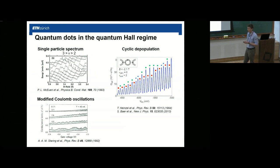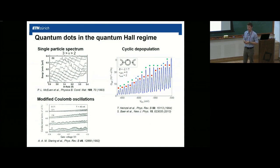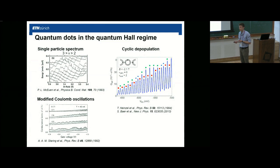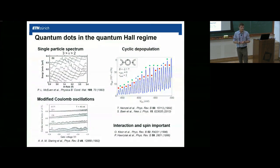This is closely related to cyclic depopulation. At filling factor two, our dot has two compressible rings inside. The amplitude of Coulomb oscillations is higher when tunneling through the outer ring than through the inner ring — outer ring marked by green dots and inner by red dots. This is called cyclic depopulation: as we deplete our quantum dot, we see a pattern of weak and strong peaks corresponding to cyclic depopulation going through the outer or inner Landau level. Interactions and spin were also shown to modify all these results.